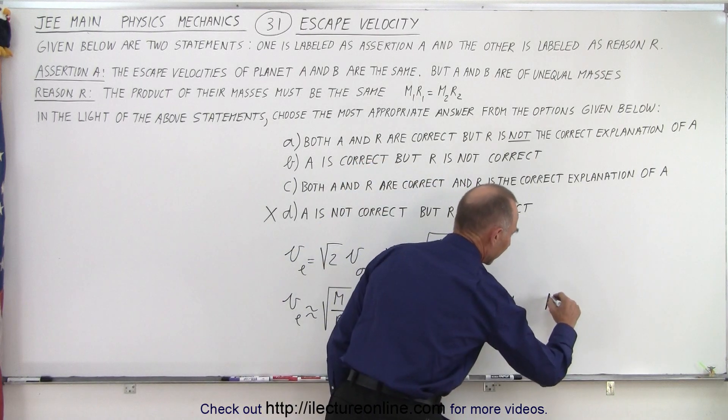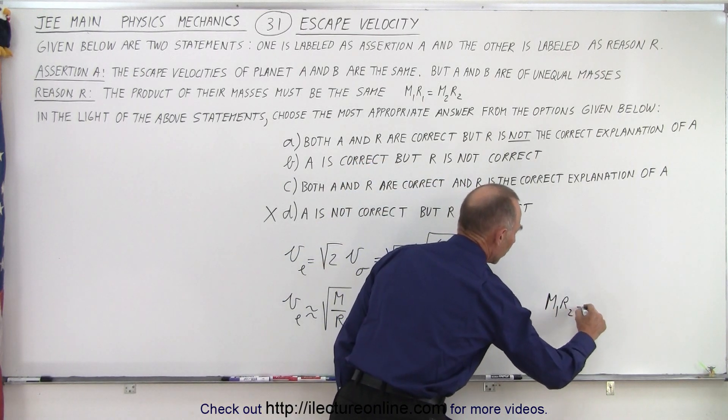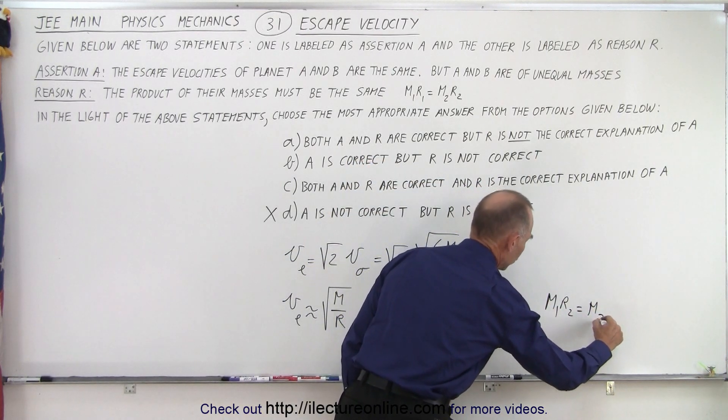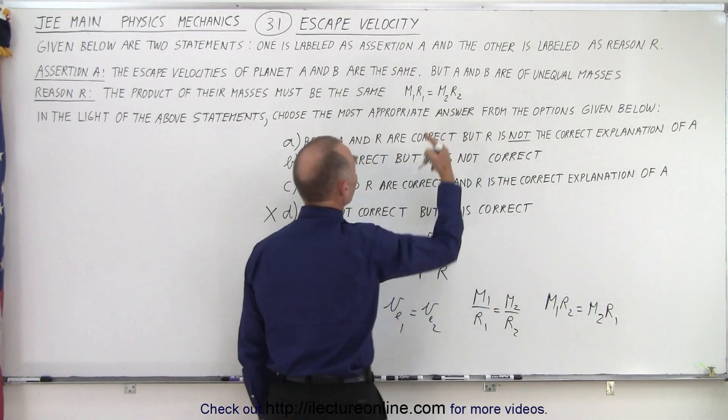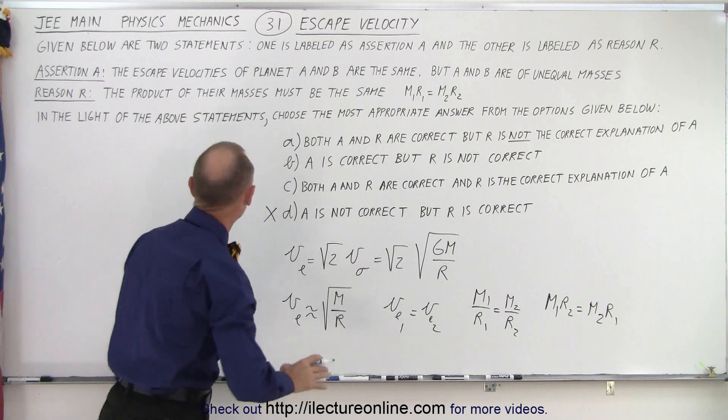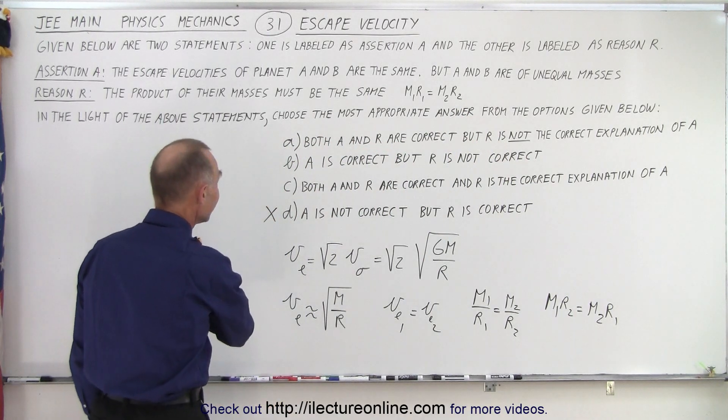So, when we cross multiply, we see that M1R2 must equal M2R1. And so, that is not what they have over there. Which means that reason R is not correct.